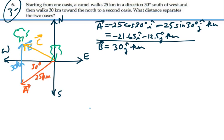All right. Our C is equal to A plus B. So that is going to be equal to negative 21.65 i, plus negative 12.5 j,